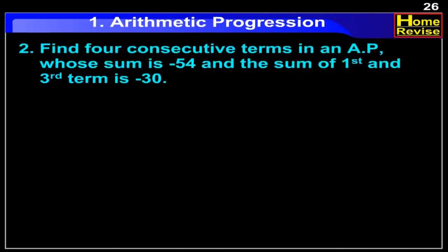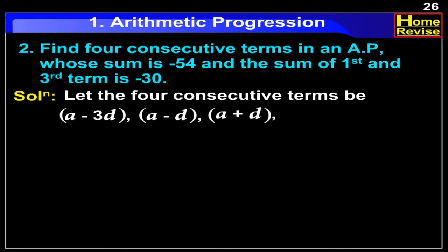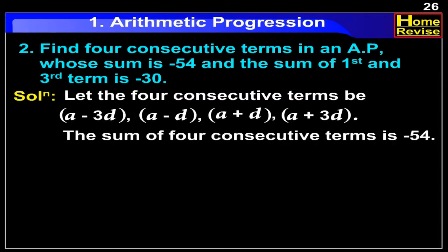Find 4 consecutive terms in an arithmetic progression whose sum is minus 54 and the sum of the 1st and the 3rd term is minus 30. Solution: Let the 4 consecutive terms be a minus 3d, a minus d, a plus d, and a plus 3d. The sum of 4 consecutive terms is given as minus 54.